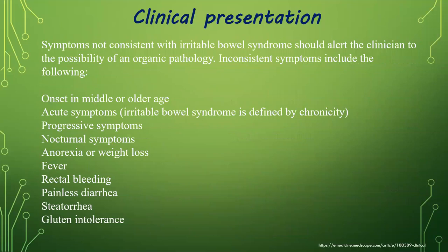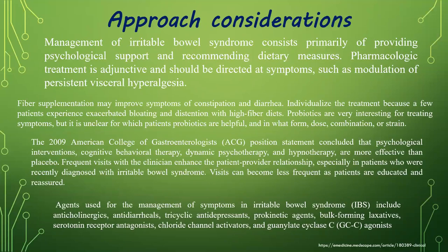Symptoms consistent with irritable bowel syndrome should alert the clinician to the possibility of organic pathology. Concerning symptoms include: onset in middle or older age, acute or progressive symptoms, nocturnal symptoms, anorexia, weight loss, fever, rectal bleeding, painless diarrhea, steatorrhea, and gluten intolerance.